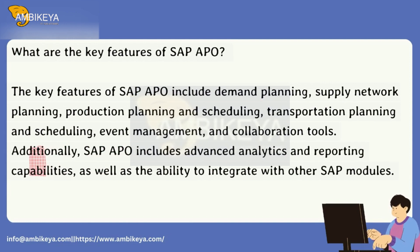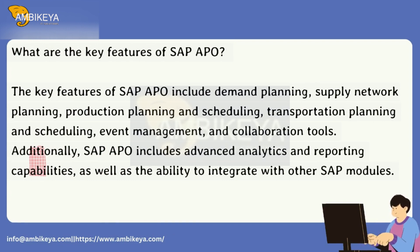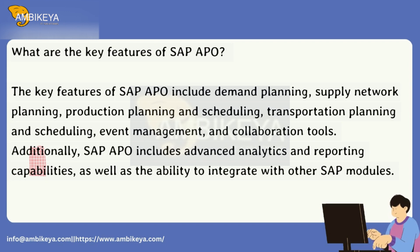What are the key features of SAP APO? The key features of SAP APO include demand planning, supply network planning, production planning and scheduling, transportation planning and scheduling, event management, and collaboration tools. Additionally, SAP APO includes advanced analytics and reporting capabilities, as well as the ability to integrate with other SAP modules.